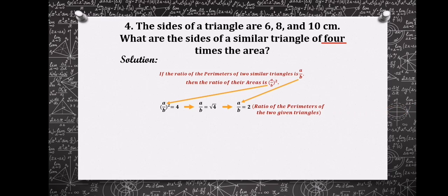So we just have to multiply all the given sides of the triangle 6, 8, and 10 by 2. Therefore, the sides of the similar triangle are 6 times 2 which is 12, 8 times 2 which is 16, and 10 times 2 which is 20. So the dimensions of the similar triangle is 12, 16, and 20.